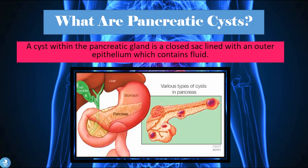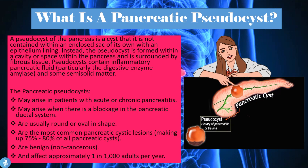A pseudocyst of the pancreas is a cyst that is not contained within an enclosed sac of its own with an epithelium lining. Instead, the pseudocyst is formed within a cavity or space within the pancreas and is surrounded by fibrous tissue. Unlike the simple pancreatic cysts, the pseudocysts form within any part of the pancreas in just a cavity or space, filling with fluid, and are surrounded by pancreatic fibrous tissue. They do not have the epithelium lining that pancreatic cysts have.